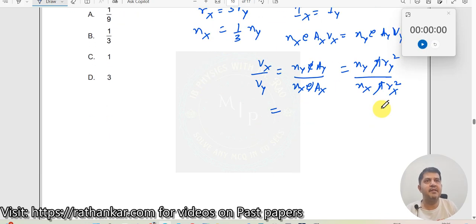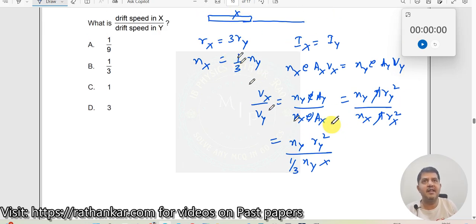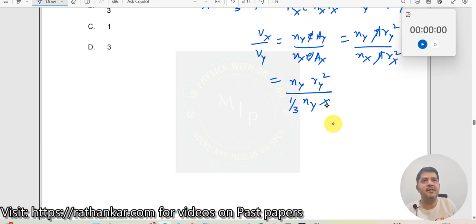Let us take it downwards. Now, r_x equal to three times r_y. N_y r_y square divided by what is n_x? N_x is one third of n_y, n_y multiplied by what is r_x? R_x is three times r_y. Three times r_y means it should be nine times r_y square.